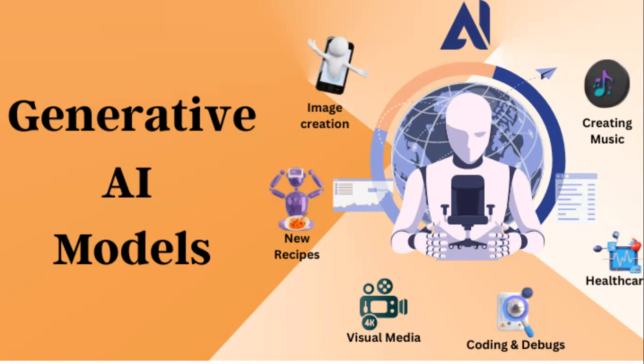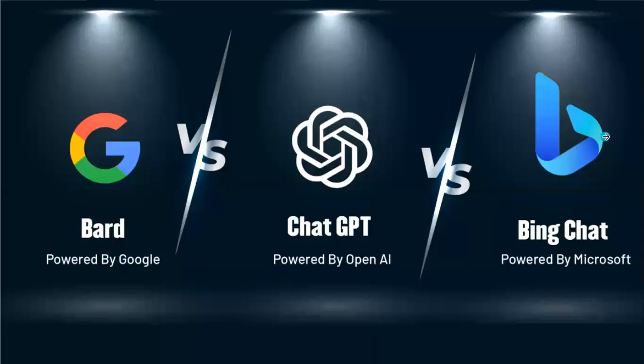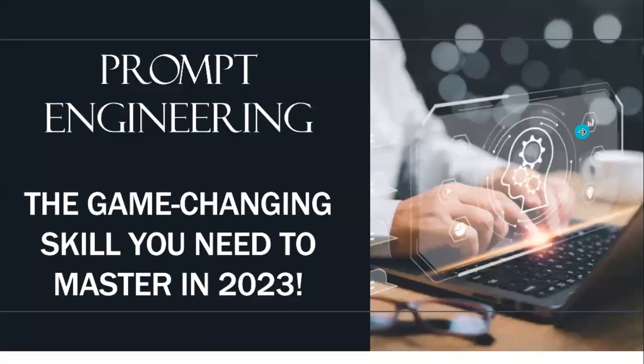We can check out tools like ChatGPT, which is very famous, and Bing Chat. These are Generative AI tools. If you type in a proper way, you can get good results. This is related to prompt engineering.